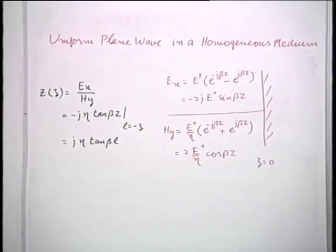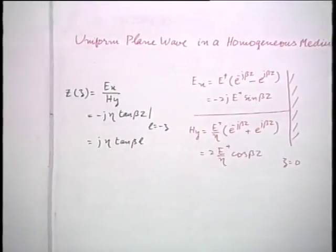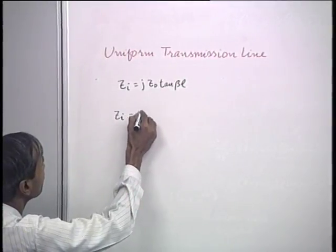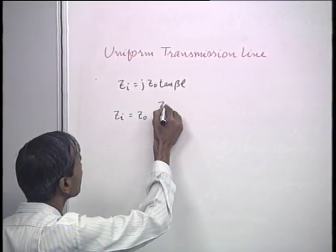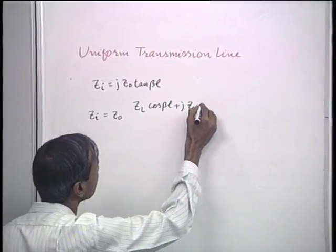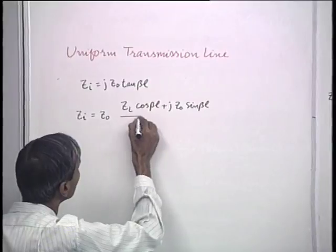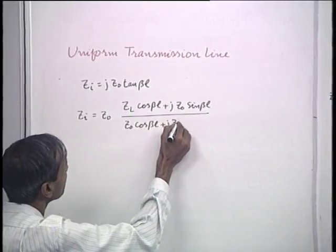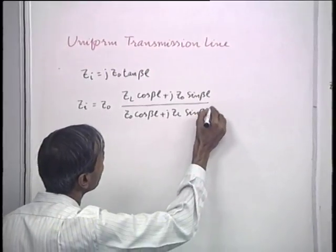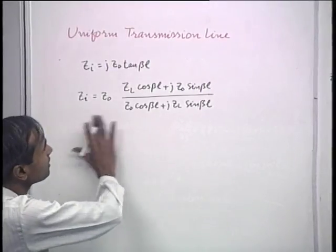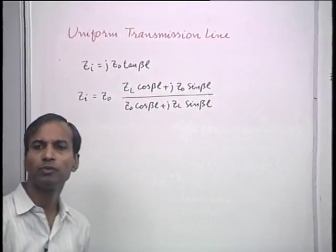One can use the transmission line input impedance results directly for plane wave situations. The input impedance in the general case is Z_i = Z₀ · (Z_L cos βL + jZ₀ sin βL) / (Z₀ cos βL + jZ_L sin βL). It is this input impedance expression that we shall use for the problem of the plane slab.